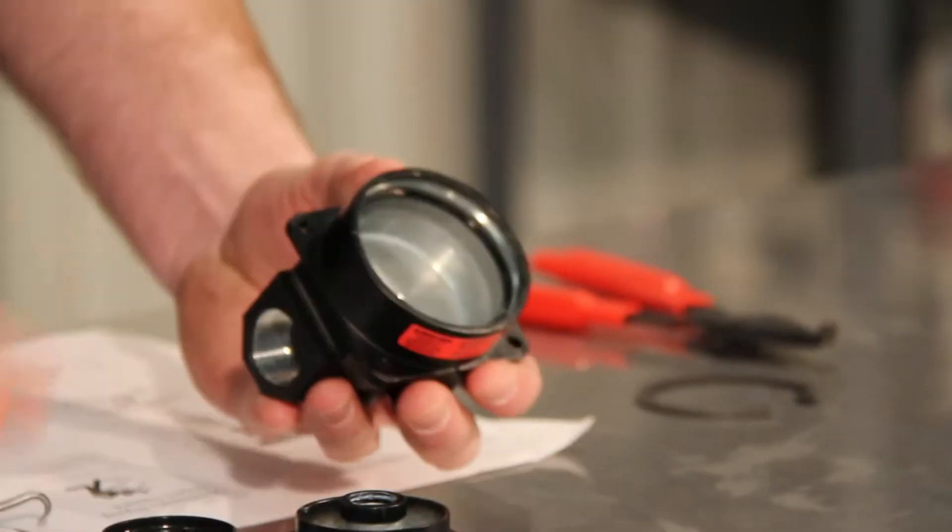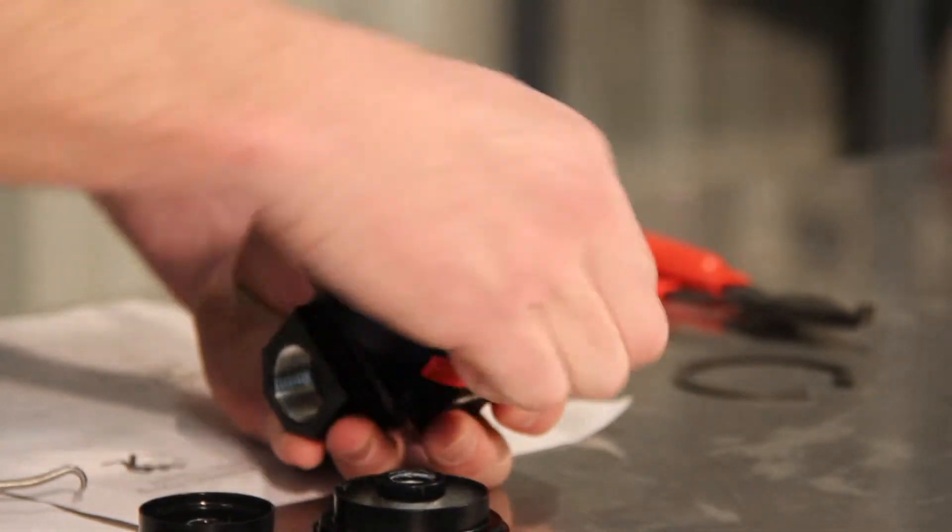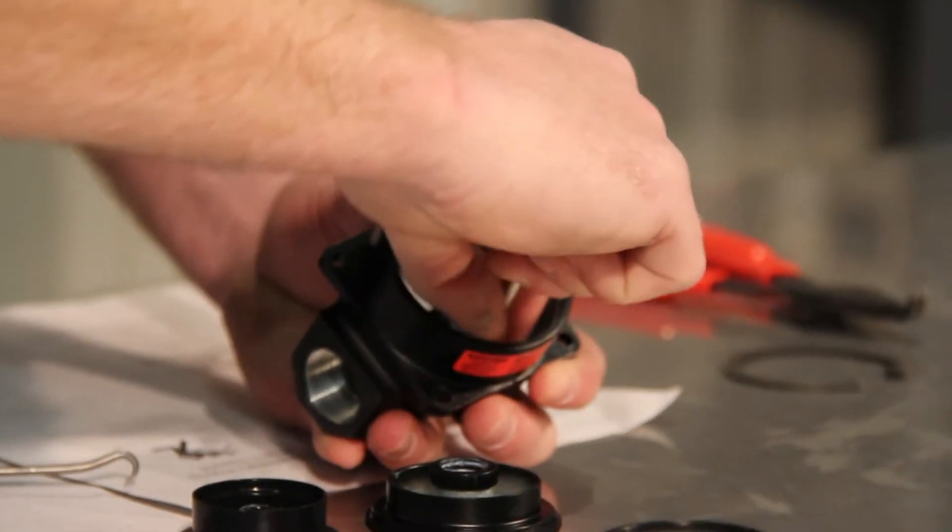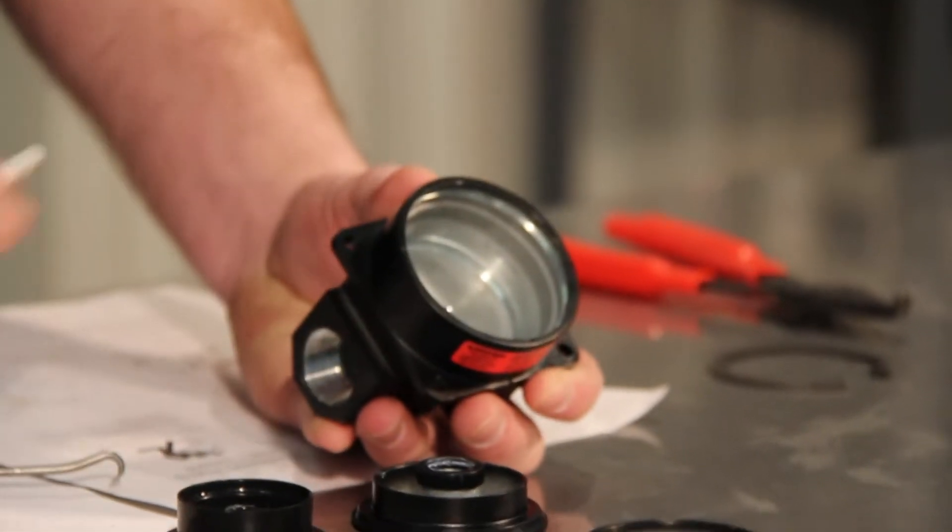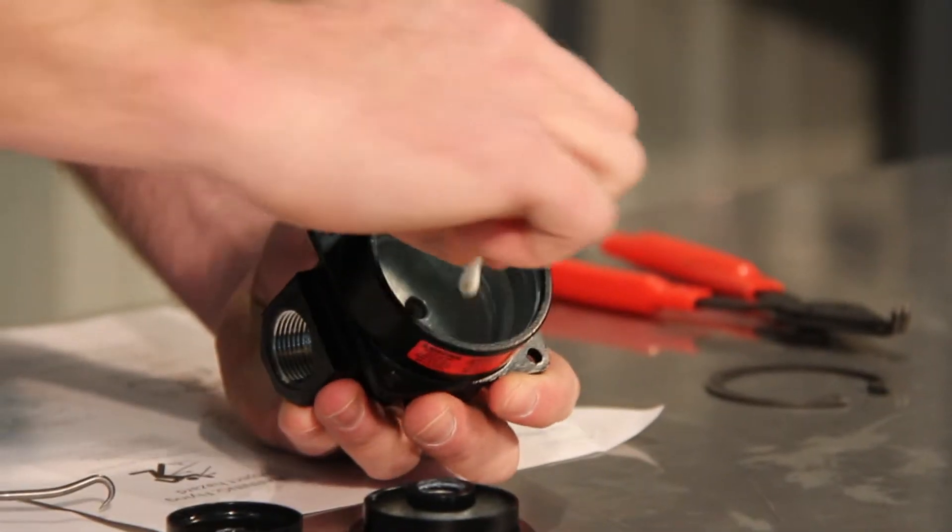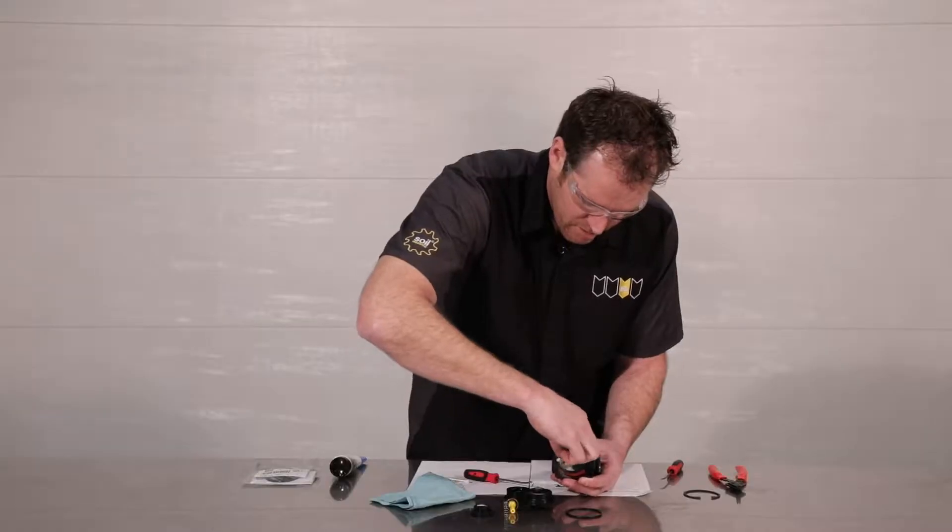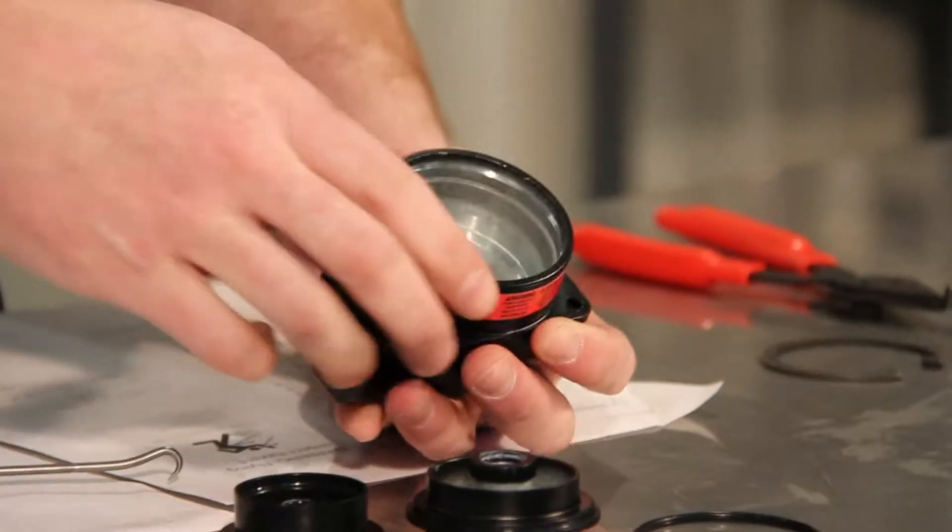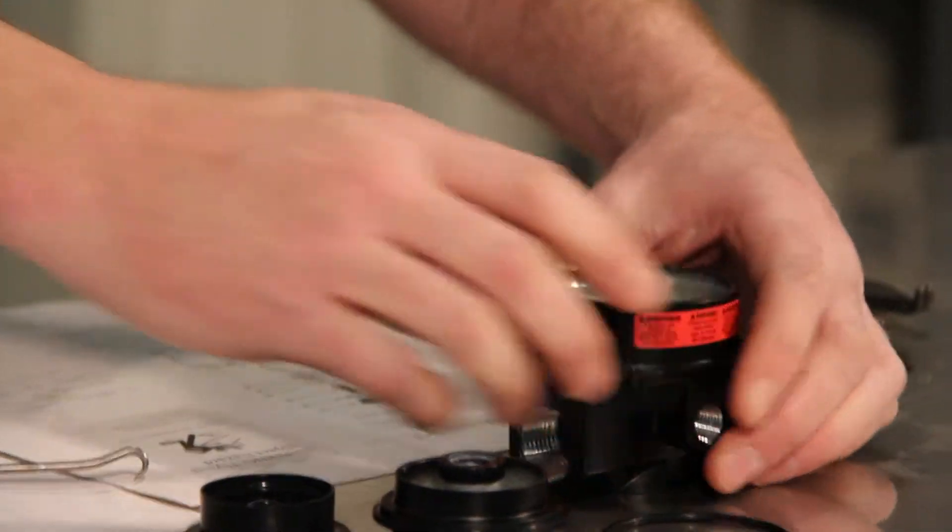You want to be cleaning out all the corners of the regulator assembly here using a cotton swab. Make sure that you're keeping the assembly free of any dust and dirt. You want to be cleaning out where the O-rings sit, where the snap rings sit. And there we go.